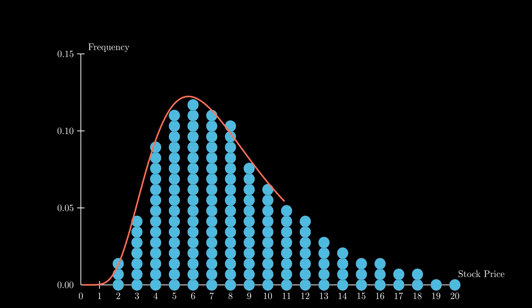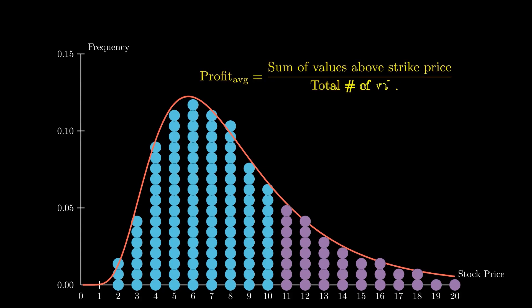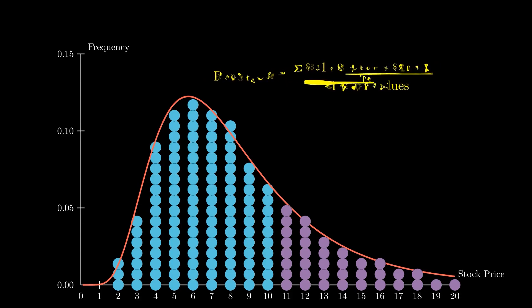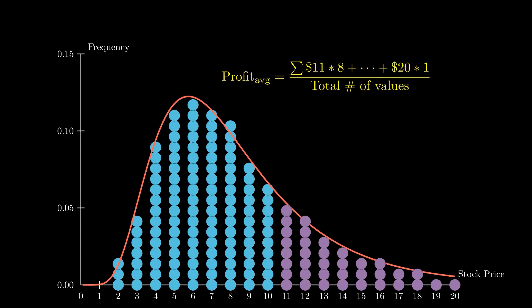Let's evaluate a call option with a strike price of 10.50. First, we calculate the value of all stock above 10.50 — meaning we're adding up the values for all stock prices in the range where the option is in the money, including $11 and higher, multiplied by their frequency. For example, $11 appears eight times, so the value of the $11 tranche is $88.